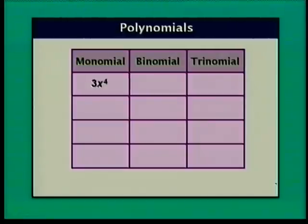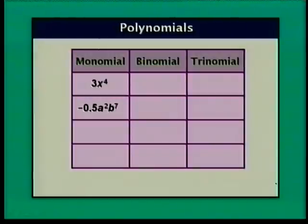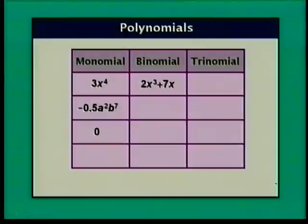3x to the 4th is a monomial — a polynomial with just one term. Negative 0.5a squared b to the 7th is also a monomial; there are two variables a and b, but this is just one term. Zero is a monomial. 2x cubed plus 7x is a binomial with two terms: 2x cubed and 7x. Negative 5x squared plus 9 is also a binomial.